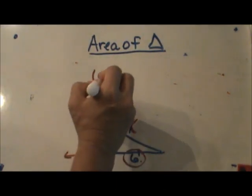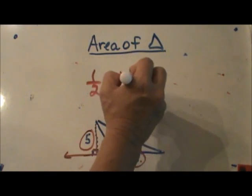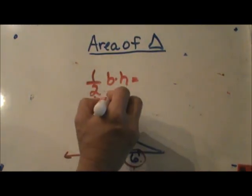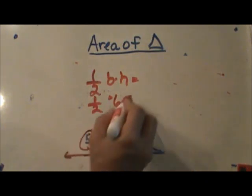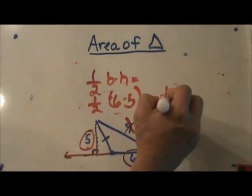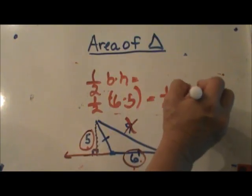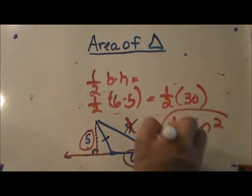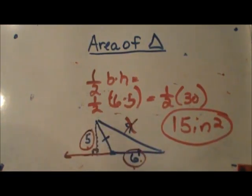Let's plug in one half base times height. So one half base is six. My height is five. Five times six is thirty. So one half times thirty is fifteen. So this one would be fifteen square inches for the area.